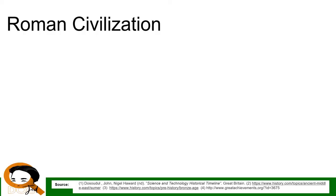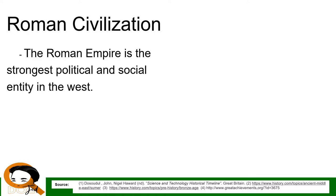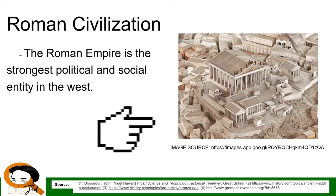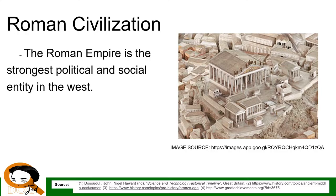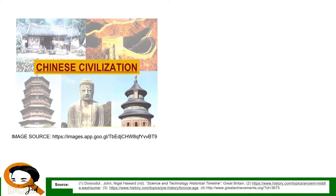The Roman Civilization: the Roman Empire was the strongest political and social entity in the west. Roman contributions include the newspaper or gazette, bound books or codex — started by Julius Caesar — Roman architecture seen in cathedrals and basilicas, aqueducts, coliseums, amphitheatres, and residential houses, as well as the Roman numeral number system.